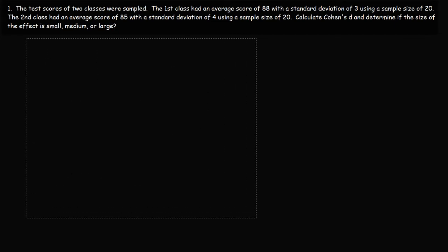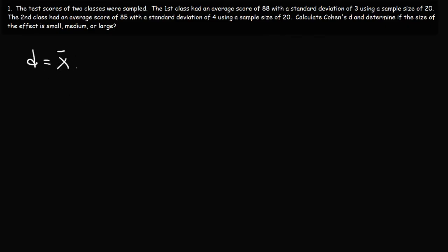The formula we need to calculate Cohen's D is the difference between the two sample means divided by the pooled standard deviation. In this problem, the test scores of two classes were sampled. The first class had an average score of 88 with a standard deviation of 3 using a sample size of 20. The second class had an average score of 85 with a standard deviation of 4 using a sample size of 20.